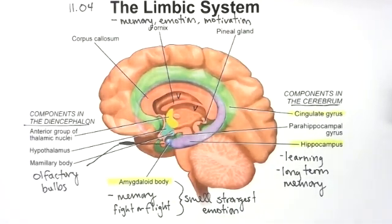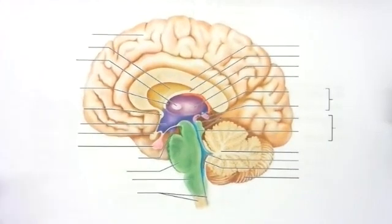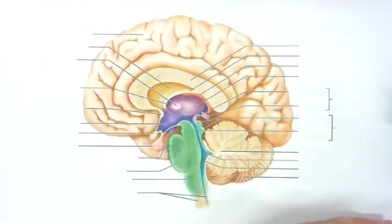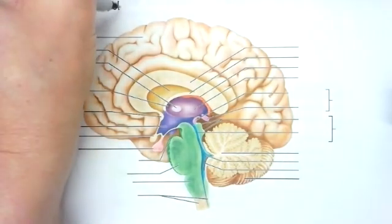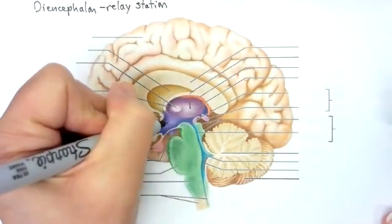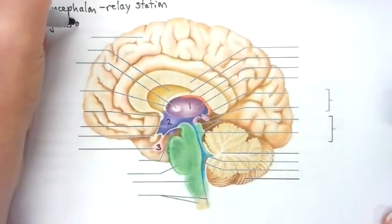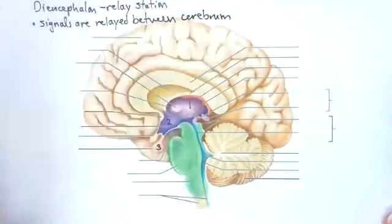We're pretty short on video length here, so I'm going to go ahead and do the diencephalon in this video as well. We're going to talk about three parts of the diencephalon and its overall function. The diencephalon is a relay station — signals are relayed between the cerebrum and the brainstem.